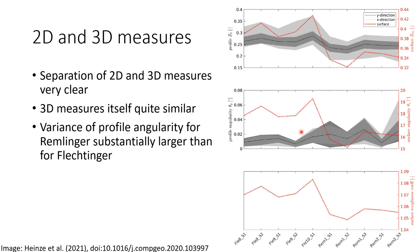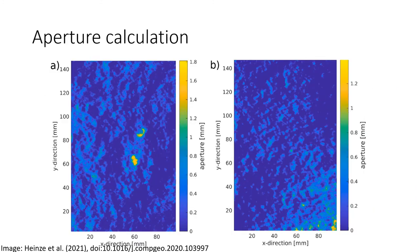Here is an example showing the aperture calculation of the Flechtinger and the Remlinger sample. You can already see a very nice potential flow path, and a couple of micropores and macropores in the Flechtinger, which were probably generated during the splitting process as larger portions of grains broke apart. In this sample you can see some strong anisotropy and a trend in one direction. You could now use these virtual aperture distributions from EPSA for flow modelling or any other process you need.